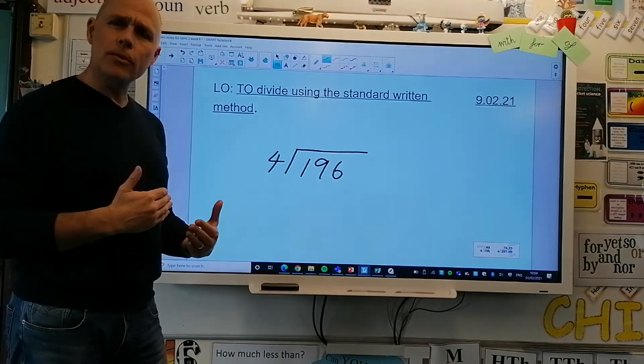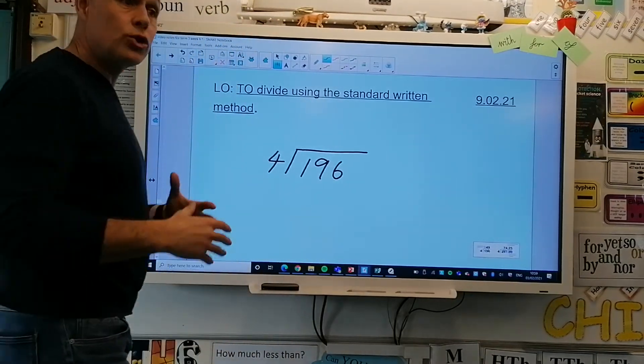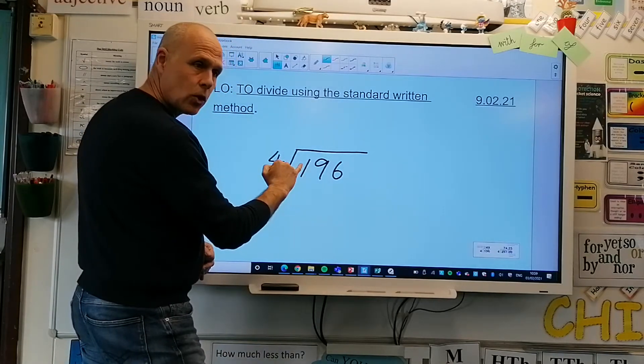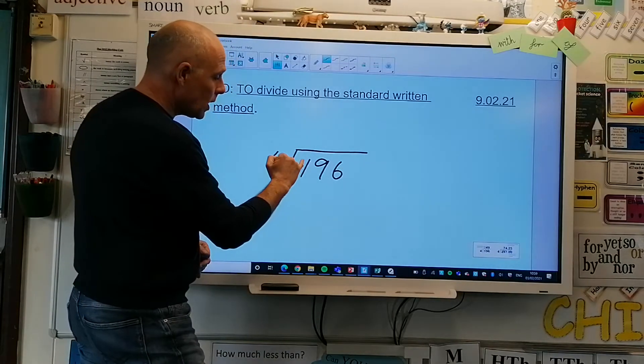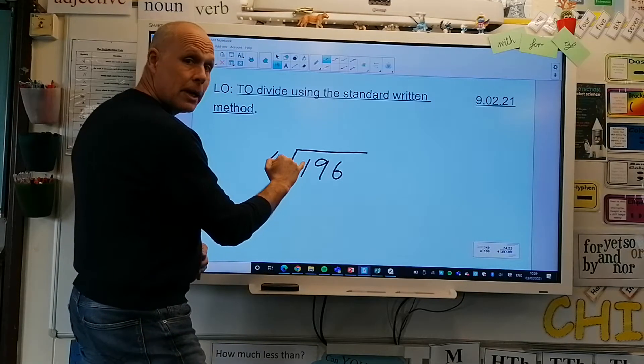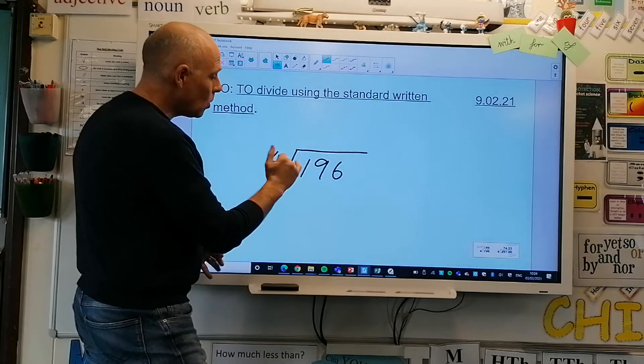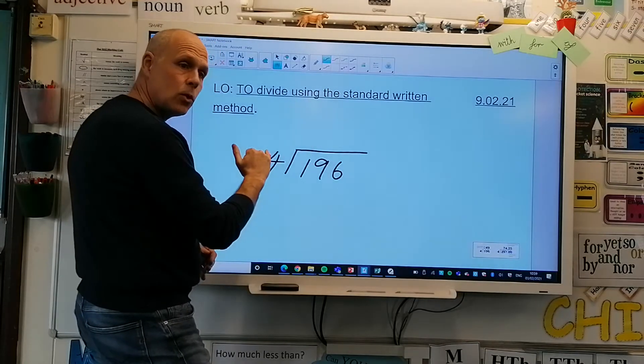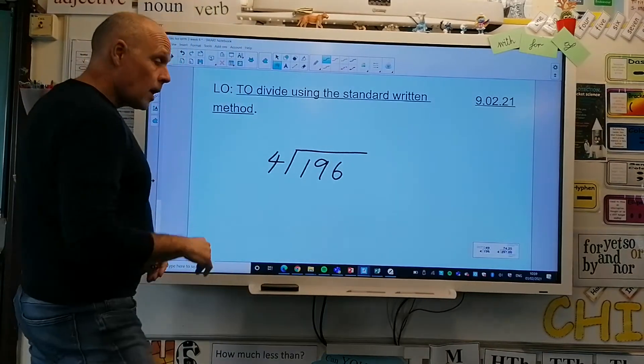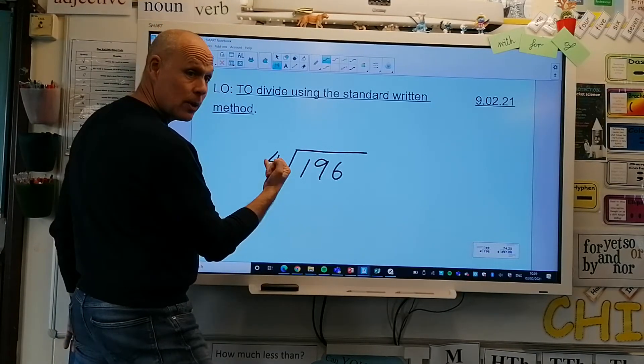The first example is 196 and we're dividing by 4. Now we all use different language. Some people are more comfortable with grouping, other people are more comfortable with sharing or just saying divide. For example, the first number we've got here is 1. One divided by 4, or we might say to ourselves how many groups of 4 can I get out of 1, or 1 shared between 4.